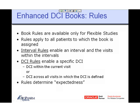DCI rules enable a specific DCI. The DCI could be within the current visit — for example, enable the infusion form for this particular visit — or it could be something that occurs in one visit and enables the DCI across all future visits where that DCI has already been defined. The rule determines what Oracle now calls 'expectedness.' The DCI book lists the complete superset of what you might expect at a visit, and the rules determine which subset becomes expected.